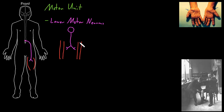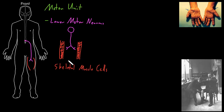Let me draw two little red tubes to represent two skeletal muscle cells being contacted by this lower motor neuron. These skeletal muscle cells are the other part of the motor unit. So the motor unit is one lower motor neuron and all the skeletal muscle cells that it contacts and controls. Now the place where a neuron contacts its target cell is called a synapse, but this synapse between a lower motor neuron and a skeletal muscle cell has a special name.